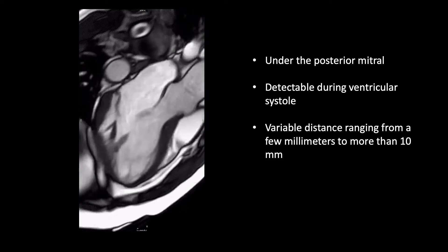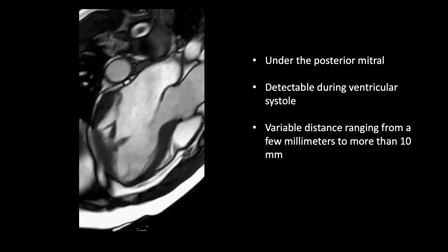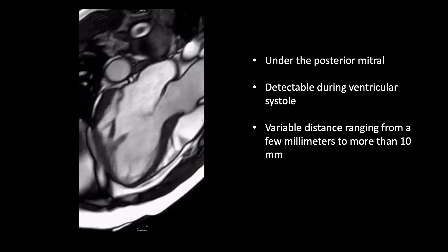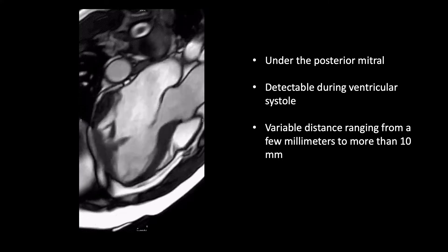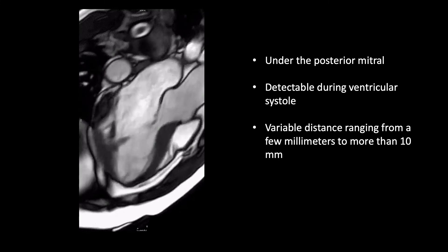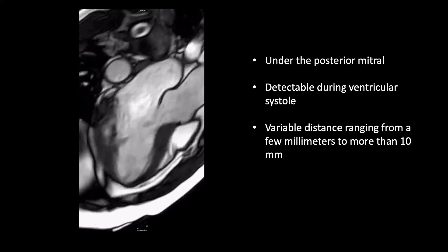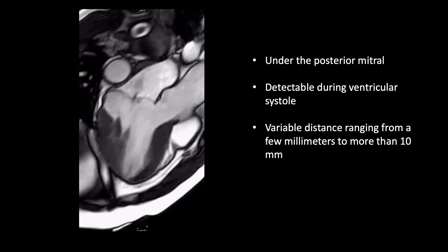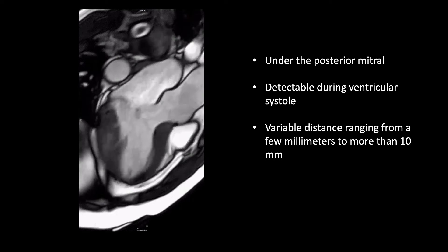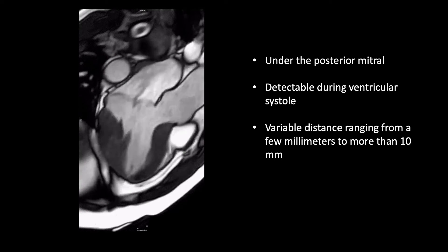It is a localized abnormality usually affecting the ventricular myocardium directly under the posterior mitral valve leaflet, typically in the region of the P1 and P2 mitral valve scallops. It is detectable during ventricular systole only, when the mitral annulus slides and detaches from the ventricular myocardium by a variable distance ranging from a few millimeters to more than 10 millimeters.